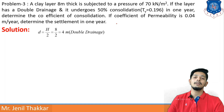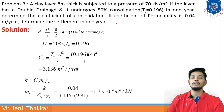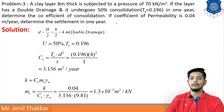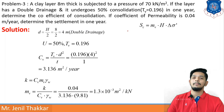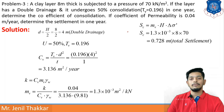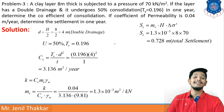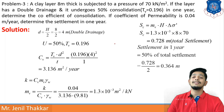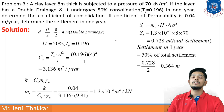H is 8 m, so drainage path D = 4 m. Using the relationship K = Cv × Mv × γw, and with K = 0.04 m/year and γw = 9.81 kN/m³, Mv is found as 1.3 × 10⁻³ m²/kN. For settlement, we use SC = Mv × H × Δσ', giving total settlement = 0.78 m. Since 50% consolidation is reached in one year, settlement in one year = 50% of 0.78 m = 0.364 m.